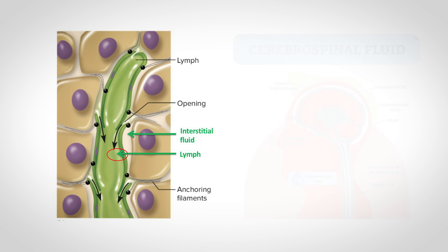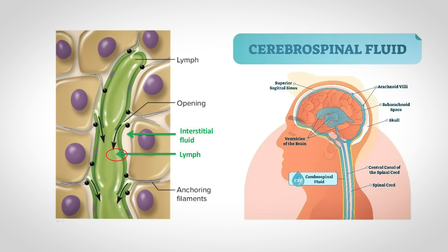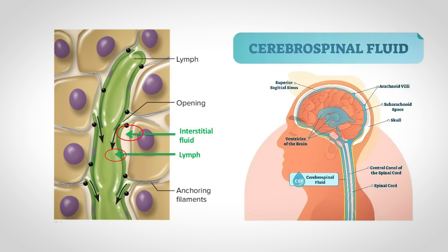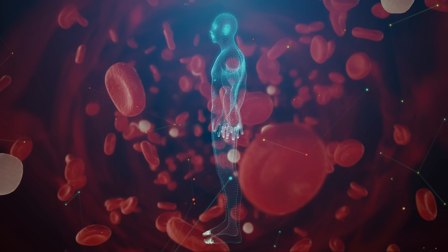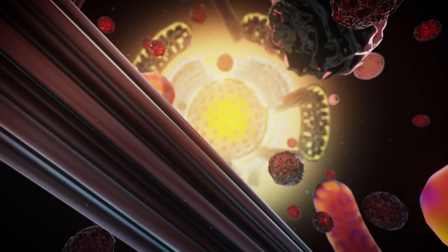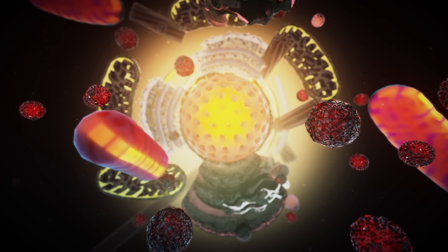Blood is closely related to other body fluids such as lymphatic fluid, cerebral spinal fluid that surrounds the brain, and the fluid between the body's cells called interstitial fluid. This makes sense because these other fluids are actually derived or created from the blood, replenished by the blood, and even returned to the blood. So in a way, all the fluid in your body at some point came from your blood, and these other fluids nourish, protect, and exchange materials with every cell in the human body.